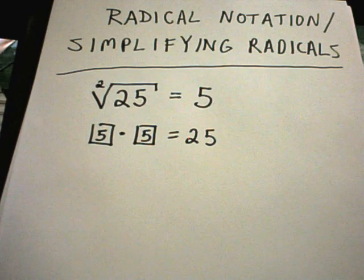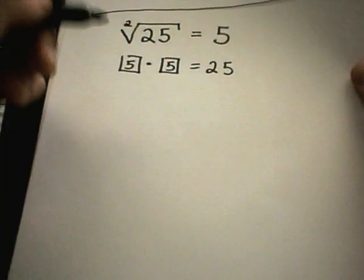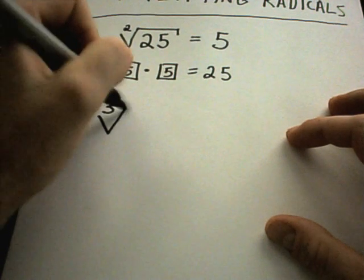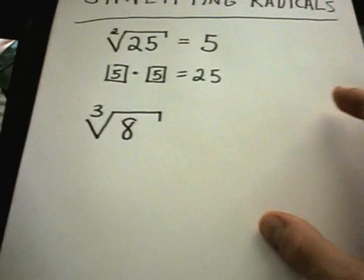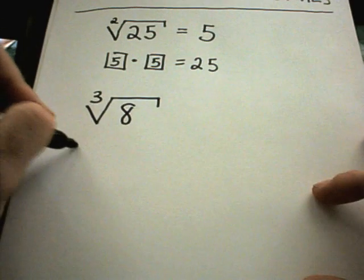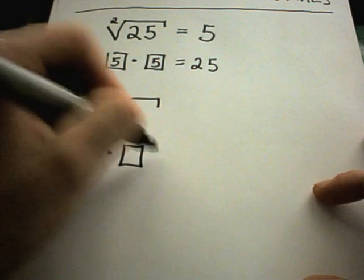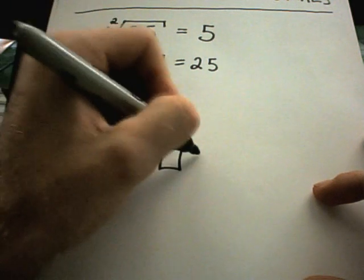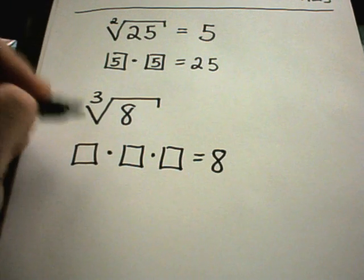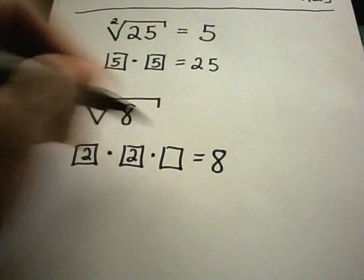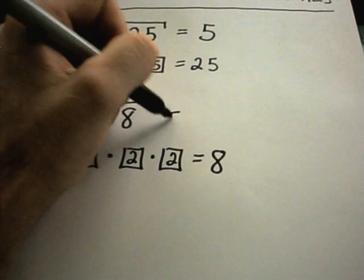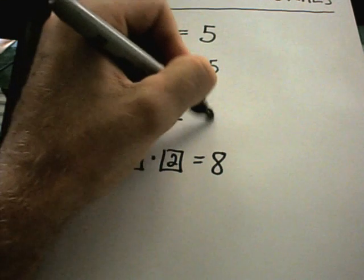Another example: suppose we have the cube root of 8. In this case, I need a number multiplied by itself 3 times to get positive 8. Notice that 2 times 2 times 2 is positive 8, so the cube root of 8 equals 2.